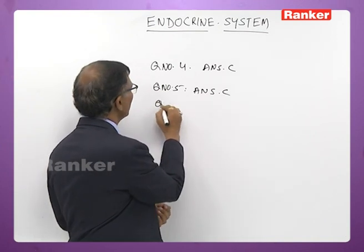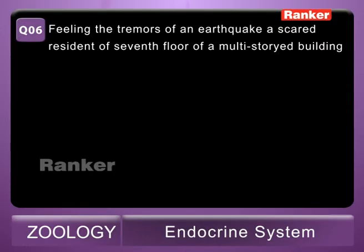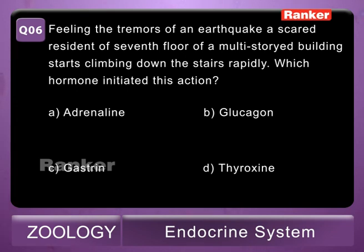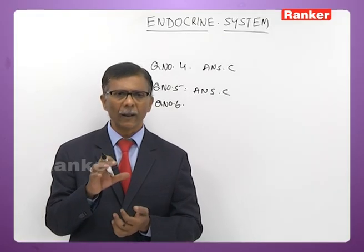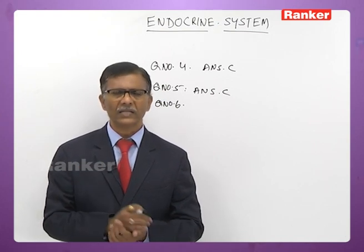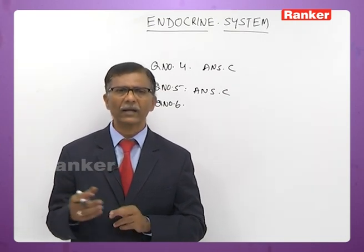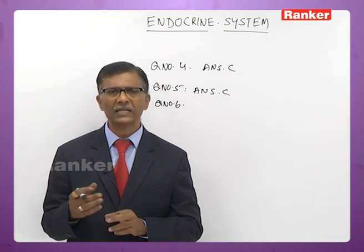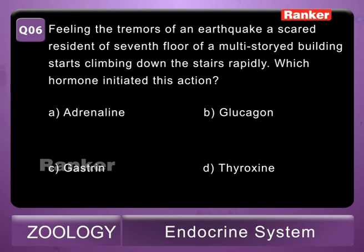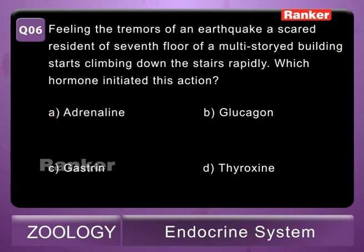Sixth question: feeling the tremors of an earthquake, a scared resident of the seventh floor of a multi-storied building starts climbing down the stairs rapidly. Which hormone initiated this action? A - adrenaline, B - glucagon, C - gastrin, D - thyroxine. Stress reactions in human beings are under the control of glucocorticoids of adrenal cortex and catecholamines of adrenal medulla. The correct answer is A — adrenaline.